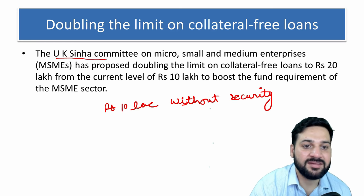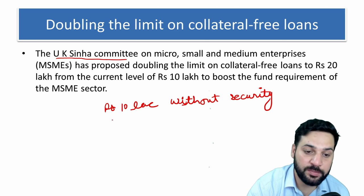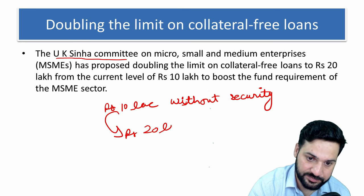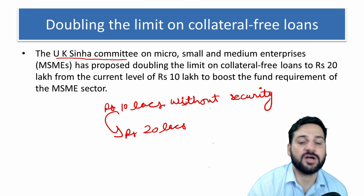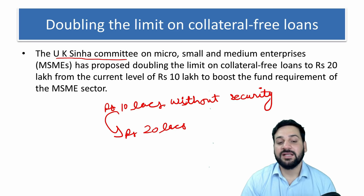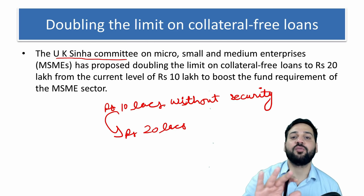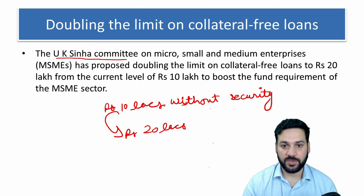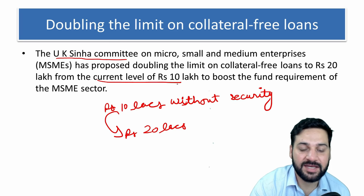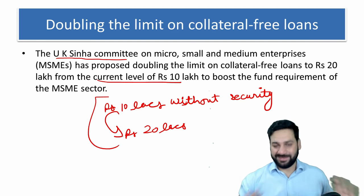The UK Sinha Committee has recommended that this limit should be increased to 20 lakh rupees — doubled from the current 10 lakh rupees to 20 lakh rupees.